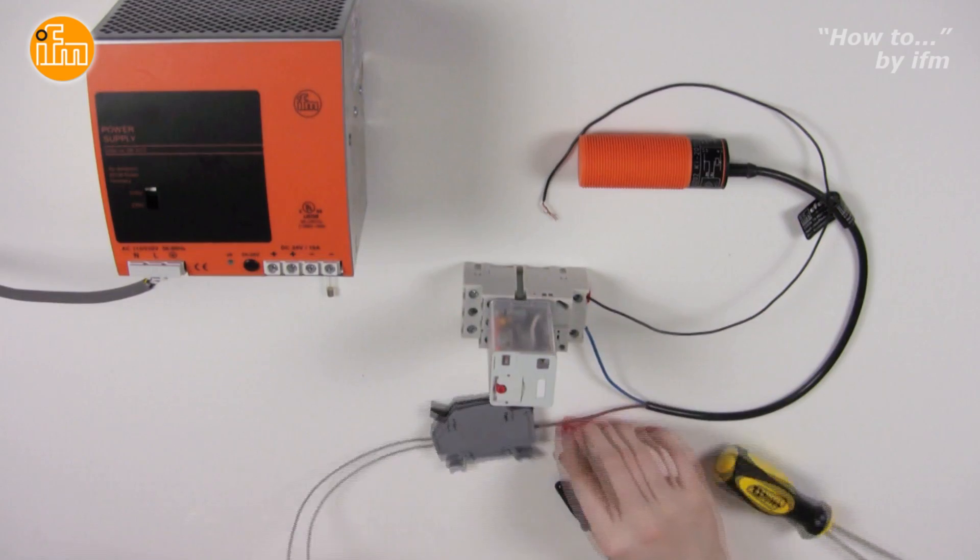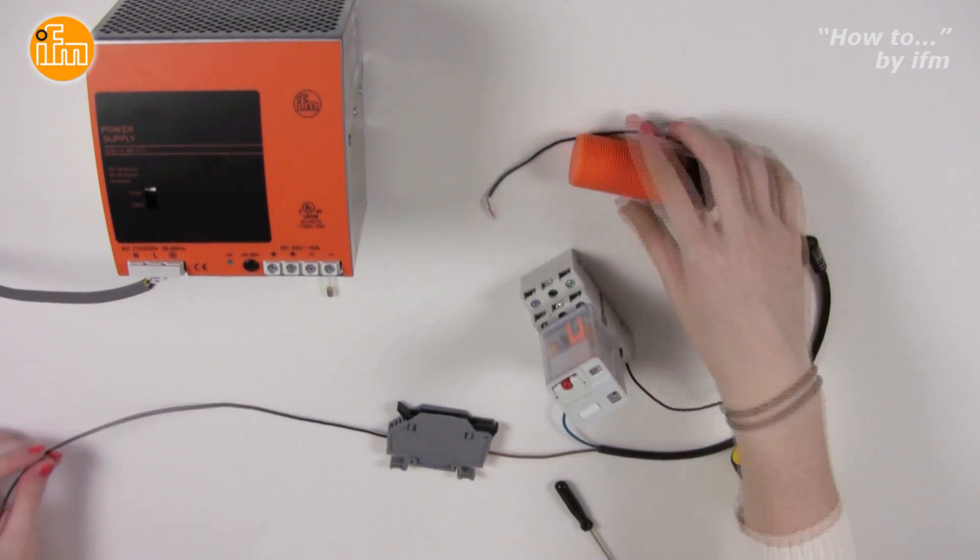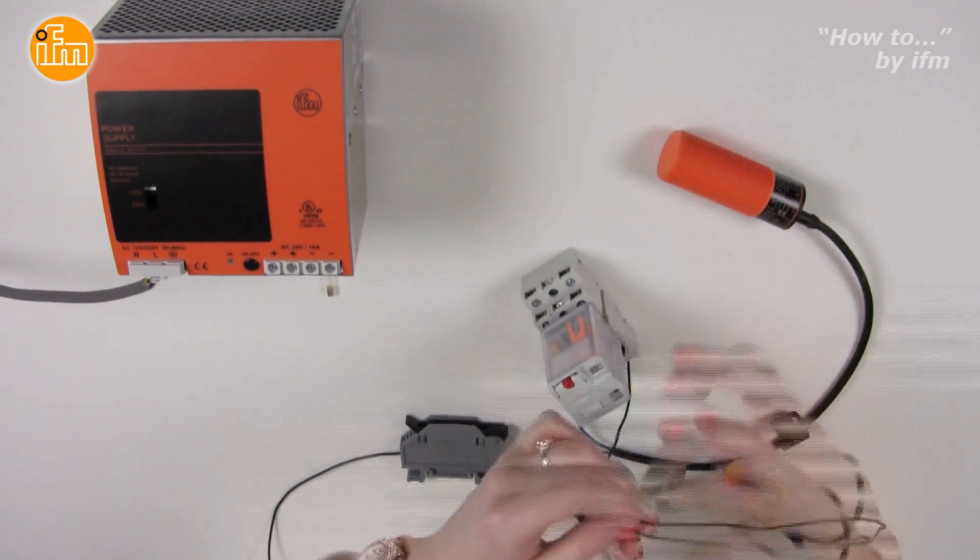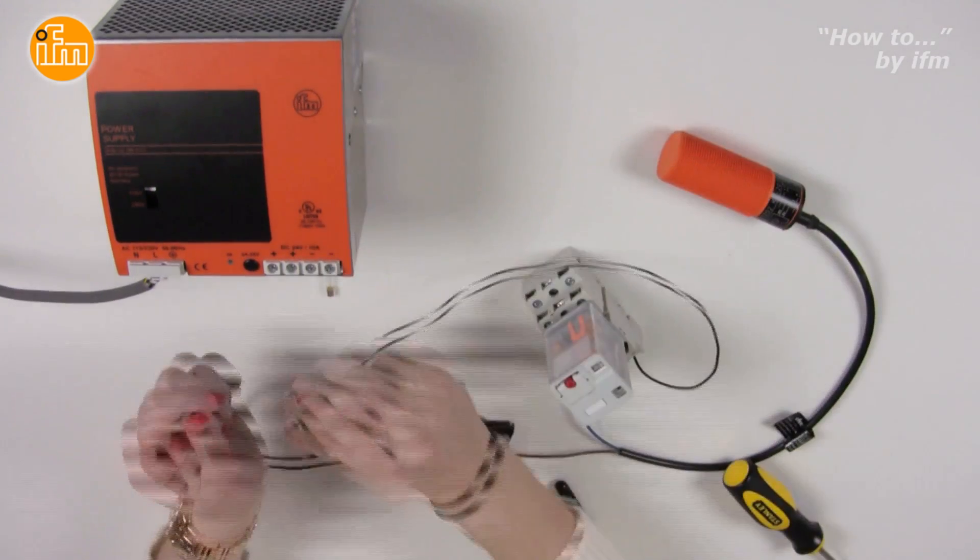In this example, the relay will be used as a load, and will display the output of the sensor by the LED on the top of the relay. Also, you will hear the click of the contacts in the relay.